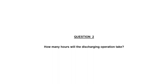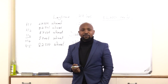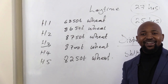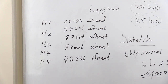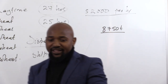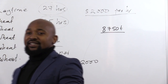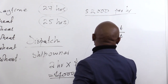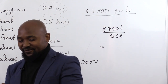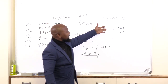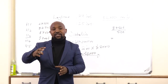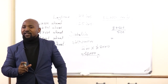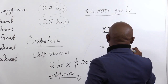Question two: how many hours will it take to discharge this cargo? Since Hold 3 determines the length, we use its cargo of 8,750 tons and divide by the rate of 50 tons per hour. 8,750 divided by 50 gives us 175 hours. Because they are working simultaneously, we use the largest hold to determine how long the cargo work will take.